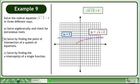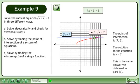Draw the graph of each function. The point of intersection is 7,3. The solution to the equation is x equals 7. This is the same answer we obtained in part A.